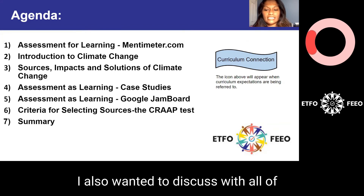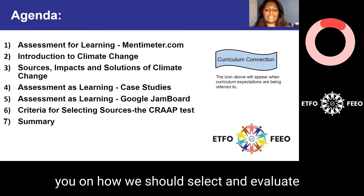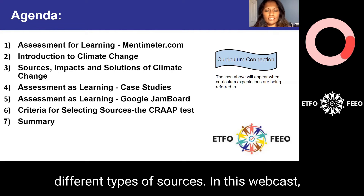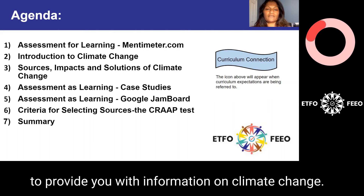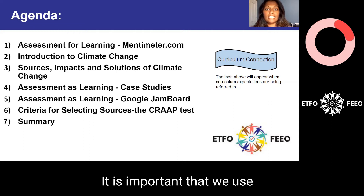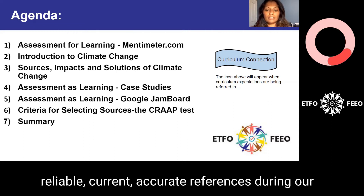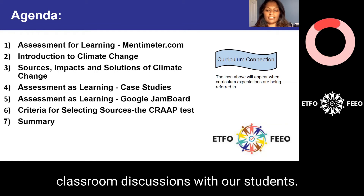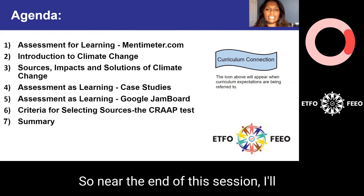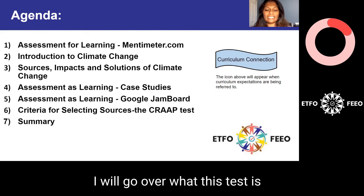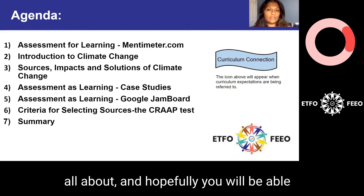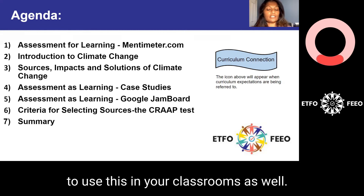I also wanted to discuss how we should select and evaluate different types of sources. In this webcast, you will notice that I use several sources to provide information on climate change. It is important that we use reliable, current, and accurate references during our classroom discussions with our students. Near the end of this session, I'll introduce you to something called the CRAAP test. I will go over what this test is all about, and hopefully you will be able to use this in your classrooms as well.